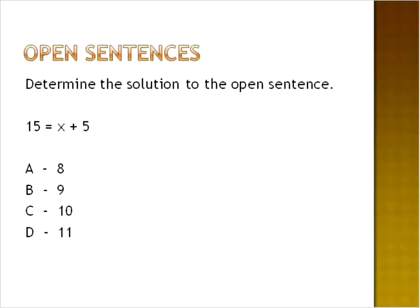The next part is called an open sentence. An open sentence is where you have an equation like fifteen is equal to x plus five, and you're given different values — A, B, C, or D: eight, nine, ten, eleven. What we need to do is use substitution to find the correct answer, taking each value and plugging it into the equation.